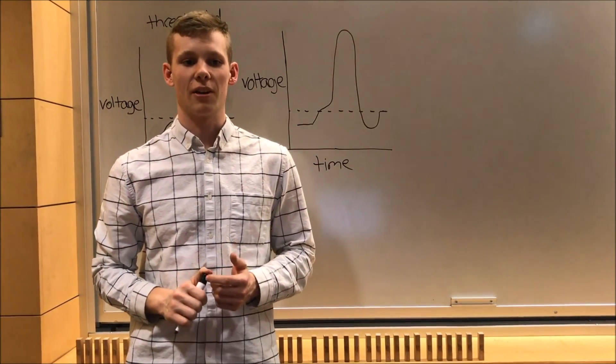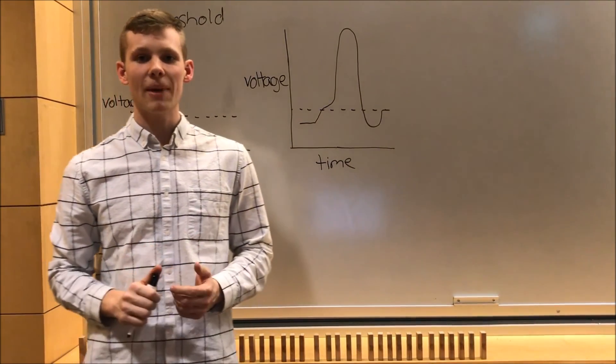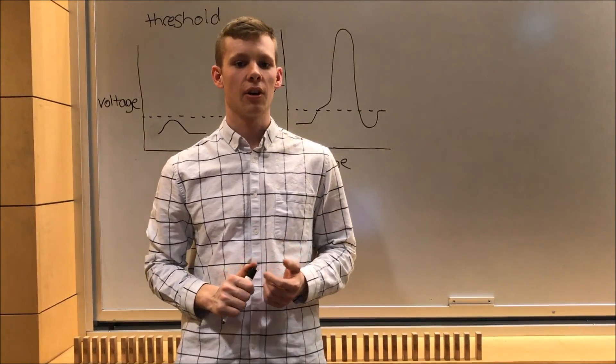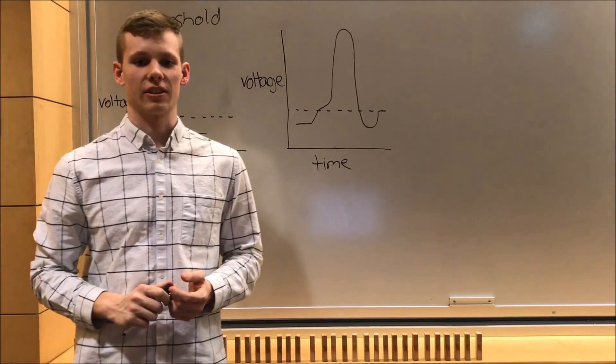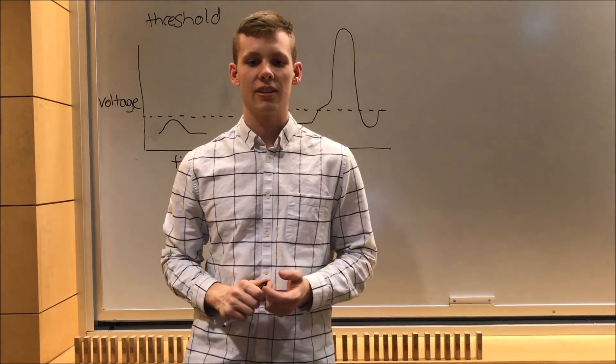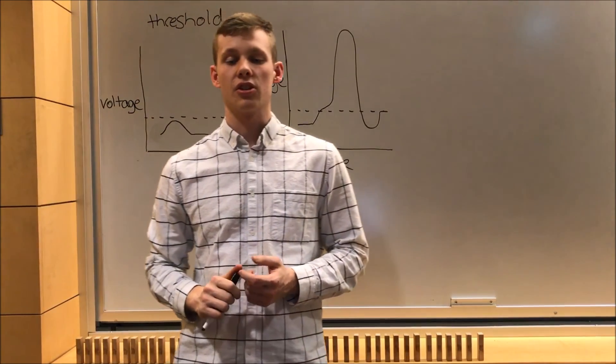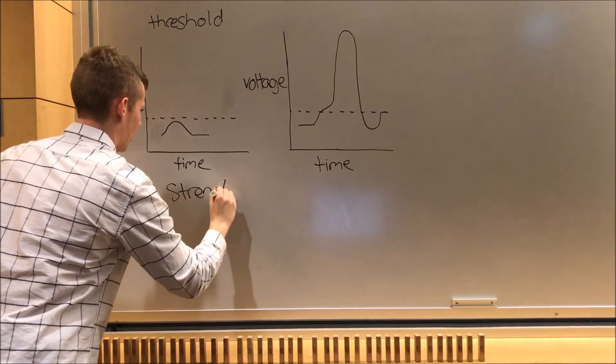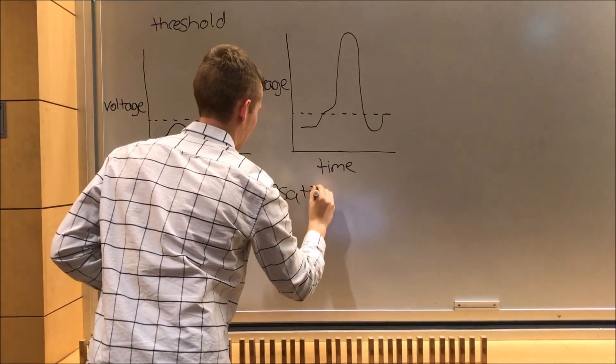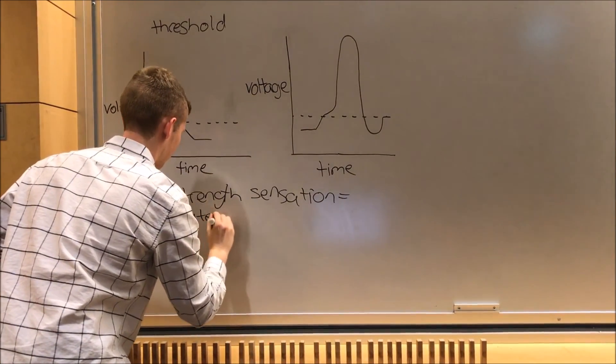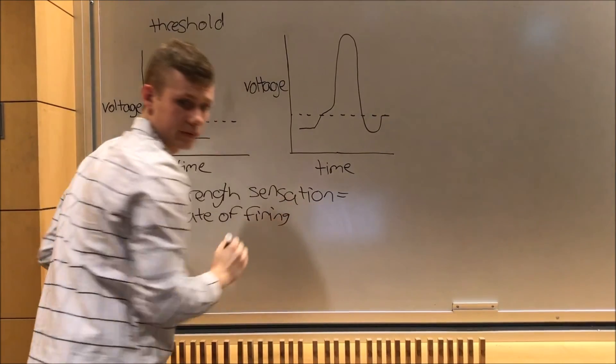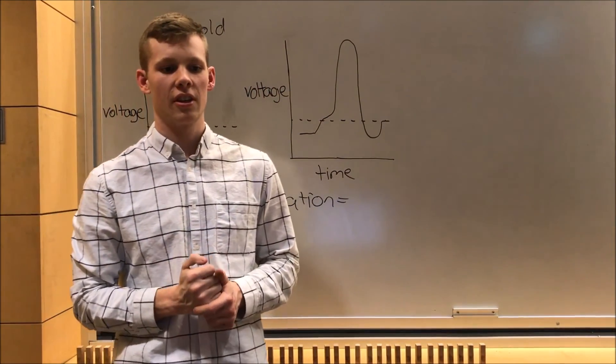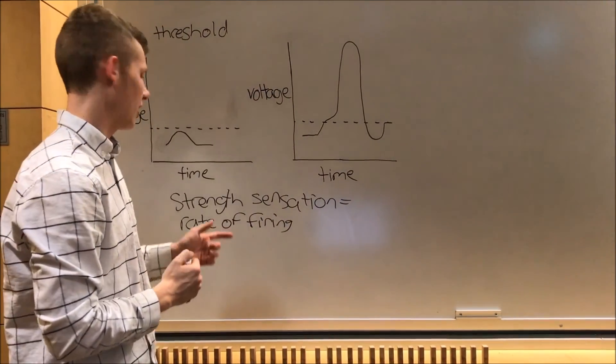Remember, action potentials help us sense our environment. However, if an action potential is all or nothing, and the same action potential occurs every time, regardless if there is a weak or strong sensation, how can a person tell the difference between a loud or a soft noise? Well, think about the beeping of a metal detector. It beeps very slowly until you near metal, and then it starts beeping much faster. Just like a metal detector, the strength of a sensation influences the rate of action potential firing. A strong sensory experience, like a loud noise, will cause neurons to fire at a faster rate than a weak sensory experience, like a soft noise. The action potential itself stays the same, but the rate of firing matches the strength of the sensing.